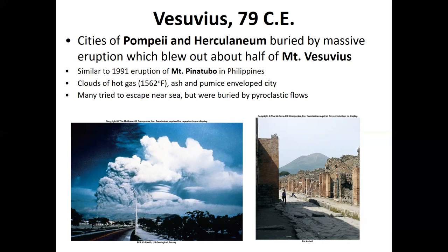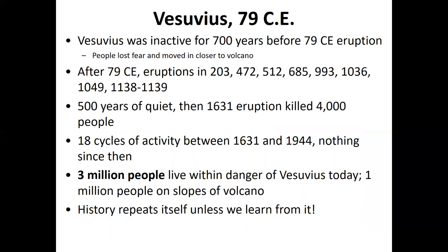The eruption of Vesuvius was very similar to the 1991 eruption of Mount Pinatubo in the Philippines. Clouds of hot gas at 1,500 degrees Fahrenheit mixed with ash and pumice enveloped the city. Many tried to escape near the sea but were buried by extremely fast-flowing pyroclastic flows, and many were fossilized in that pyroclastic material. We'll talk about what pyroclastic flows are later.